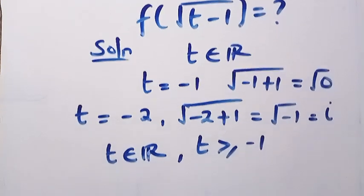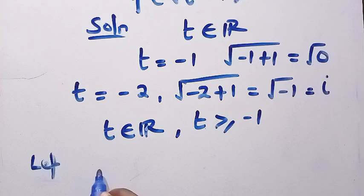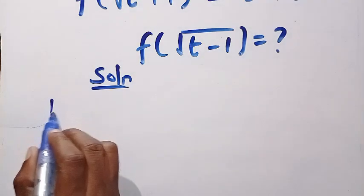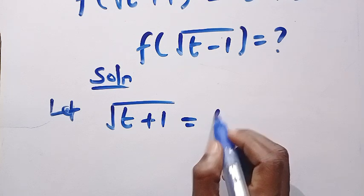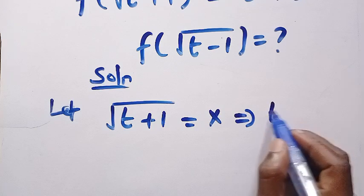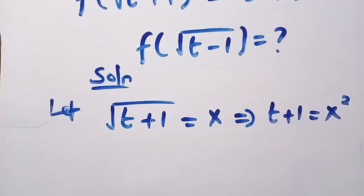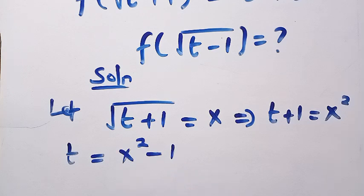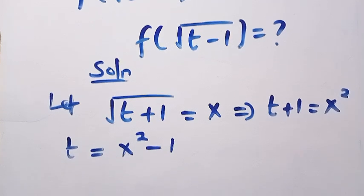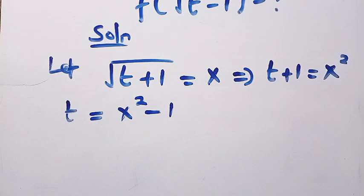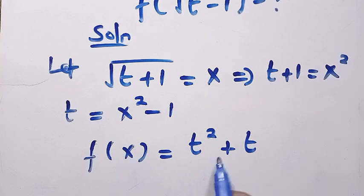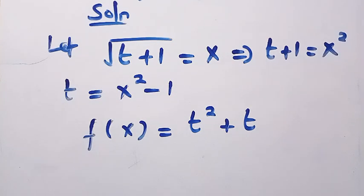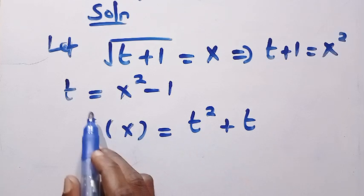Now to get f of root t minus 1, the first thing we do is let the square root of t plus 1 equal another letter — suppose I choose letter x. This implies that t plus 1 equals x squared, and t also equals x squared minus 1. We are going to re-substitute this back into the given function. Immediately we let square root of t plus 1 equal x, the new function becomes f of x equals t squared plus t, and we need to express everything in terms of x.